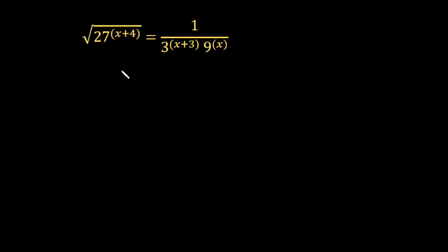Hello friends. In this lecture I am going to solve this exponential equation: 27 raised to the power x plus 4 is equal to 1 over 3 raised to the power x plus 3, times 9 raised to the power x. When you see this equation, 27, 3 and 9 are all multiples of 3.